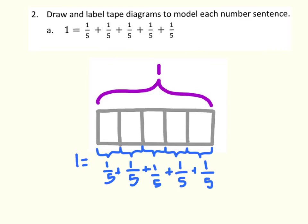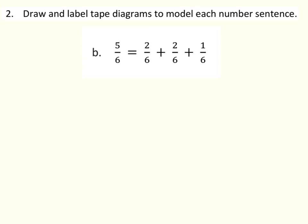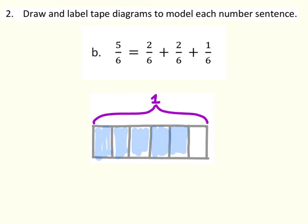Our next problem is very similar to the last one — we have our number sentence and just need to draw and label our tape diagram. But it's a little different because we don't have a one — we have five sixths. And instead of equal unit fractions, we have two sixths, two sixths, and one sixth. We still have our tape diagram and it still equals one, but the question is asking for five sixths. So to show the difference, we shade it in — five sixths of the tape diagram is shaded to show what five sixths equals: two sixths plus two sixths plus one sixth.